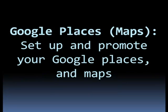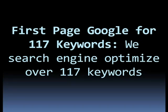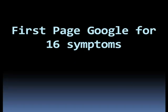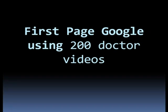Also includes Google Places setup and promotion, helping you appear on Google Maps. The system is search engine optimized for over 117 keywords, and also includes 16 different symptom-based keywords optimized for the first page of Google.